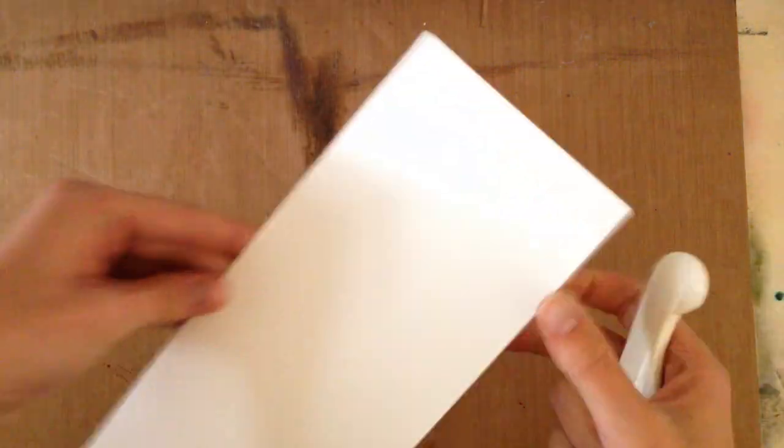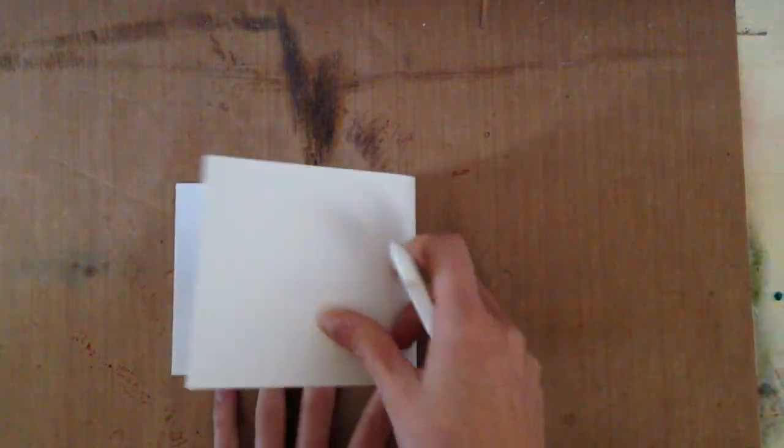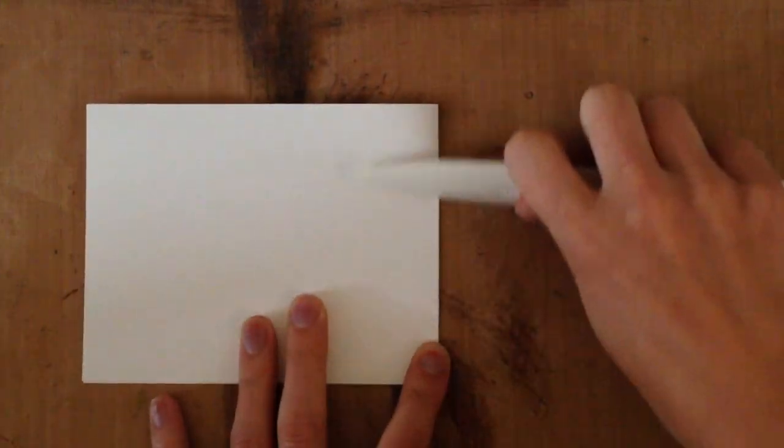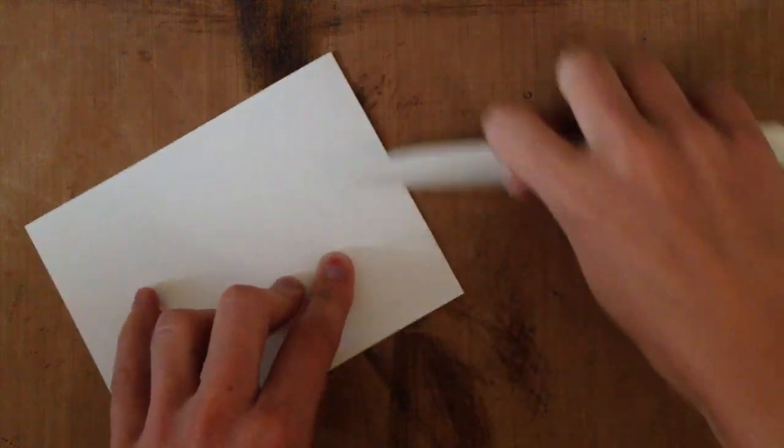We're going to start off by making our card base. I cut out a piece of 11 by 4.25 inch card stock using 110 pound Neenah Solar White and I scored that at 5.5 inches and made a top folding card.